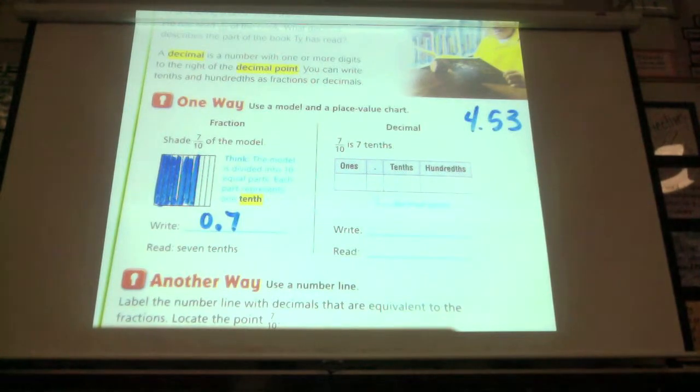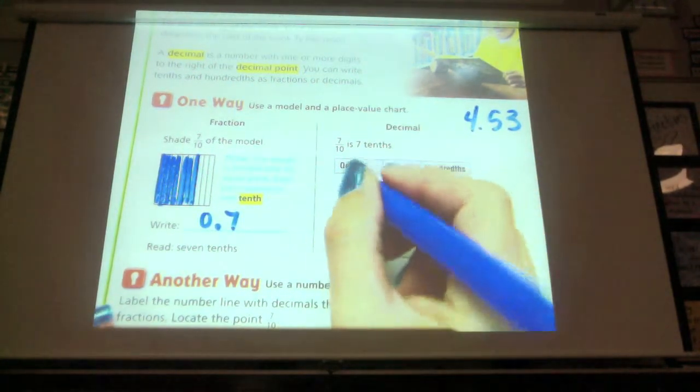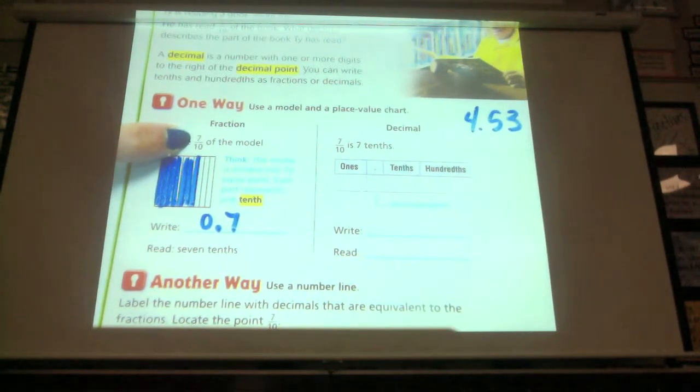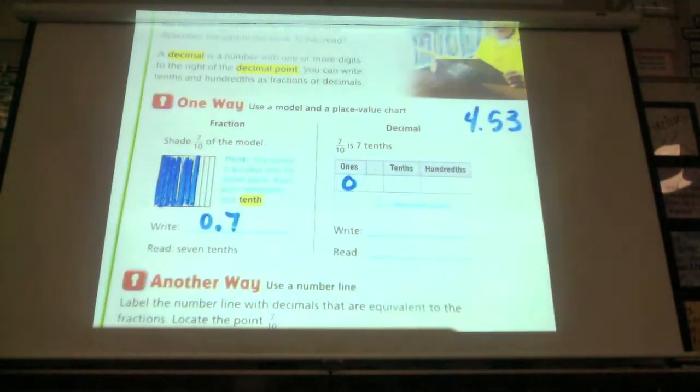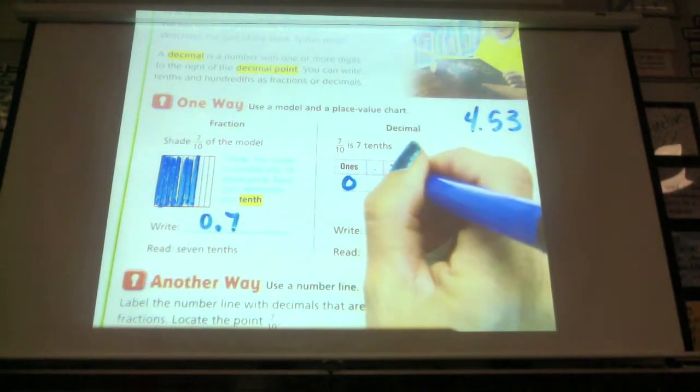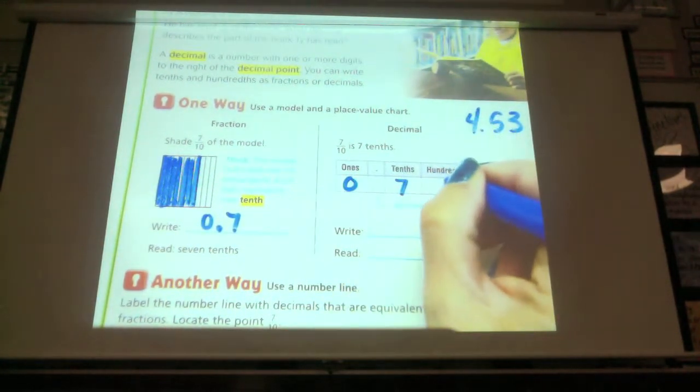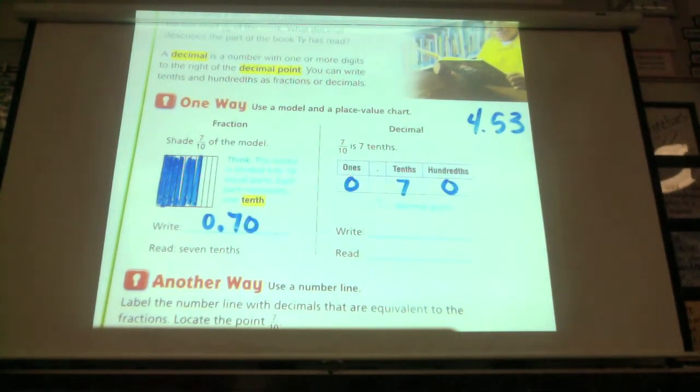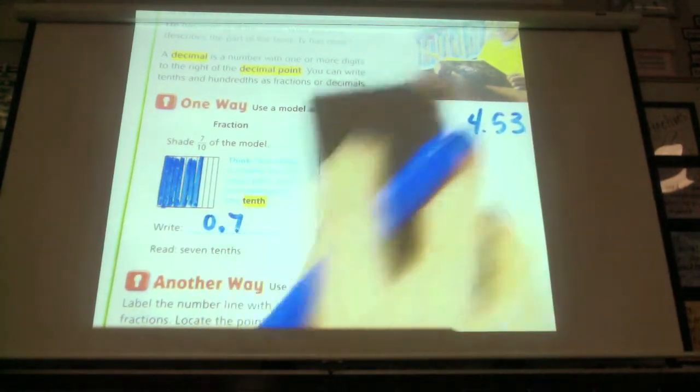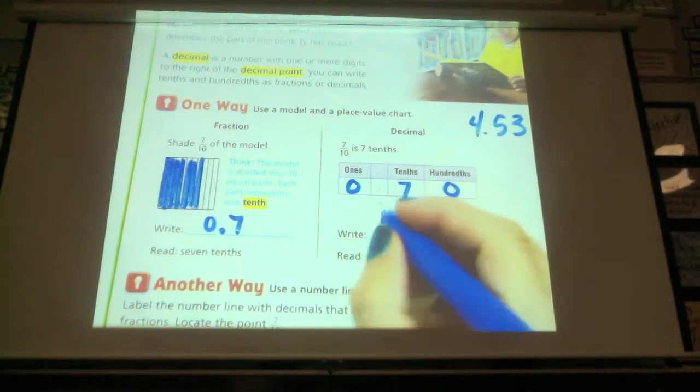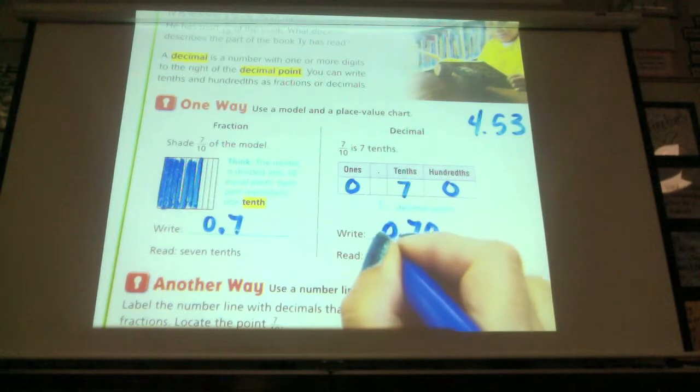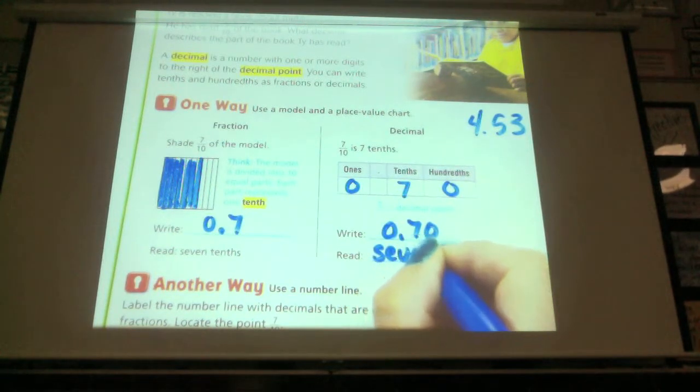So if we look at a place value chart, we have our ones on the left side of the decimal. We don't have any ones. If we look at this, it's not a mixed number. If it was a mixed number, we would have a whole number there. So we have none. We have 7 tenths, and we don't have any hundredths. So we can put 0 there. That's why it works when we do it this way. And it looks like 70 cents when it's 7 dimes. So you can write 0.70 or 7 tenths.